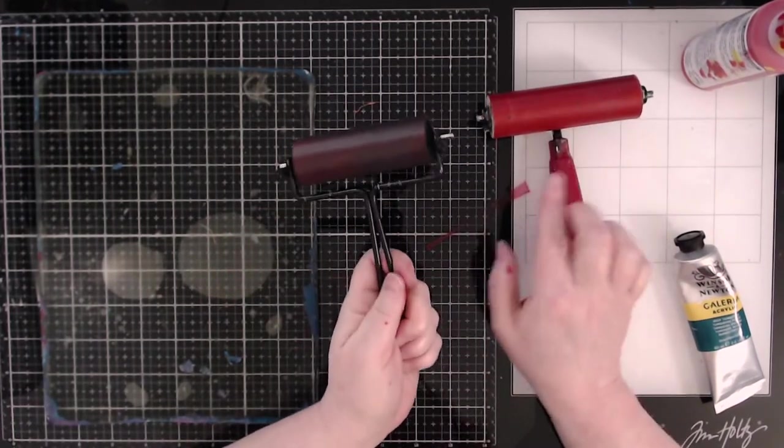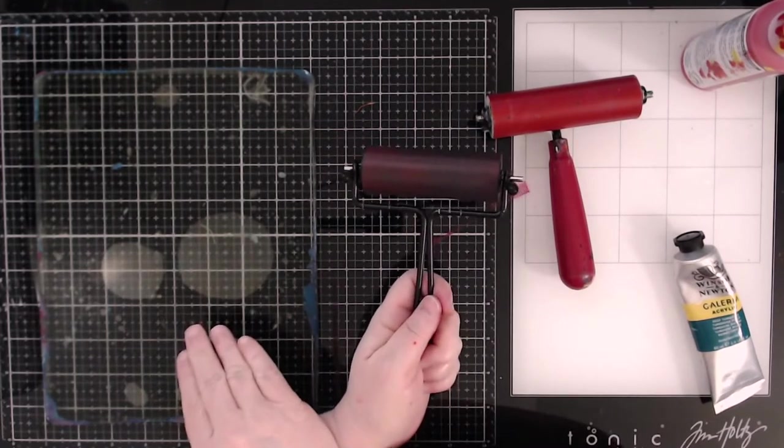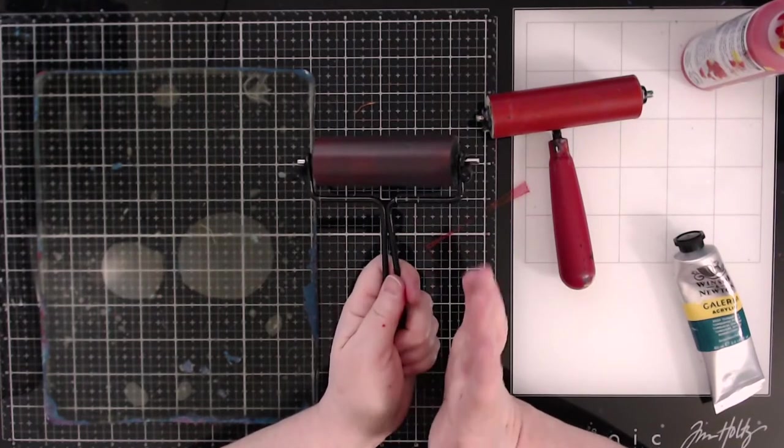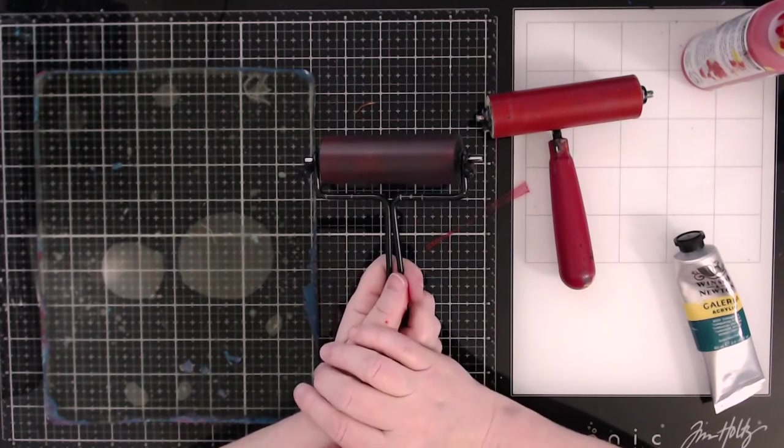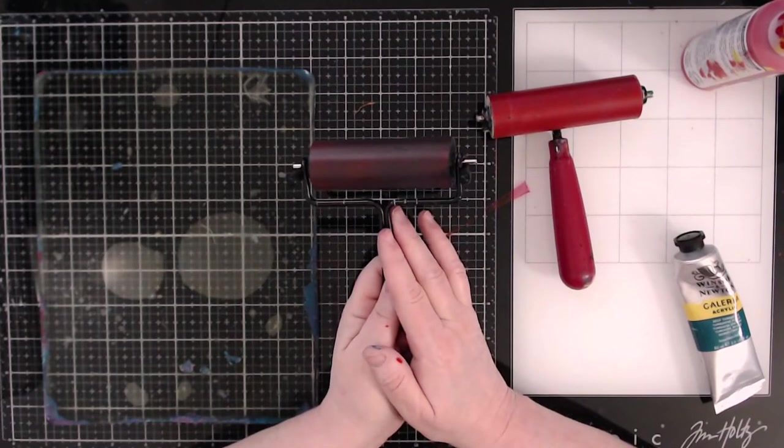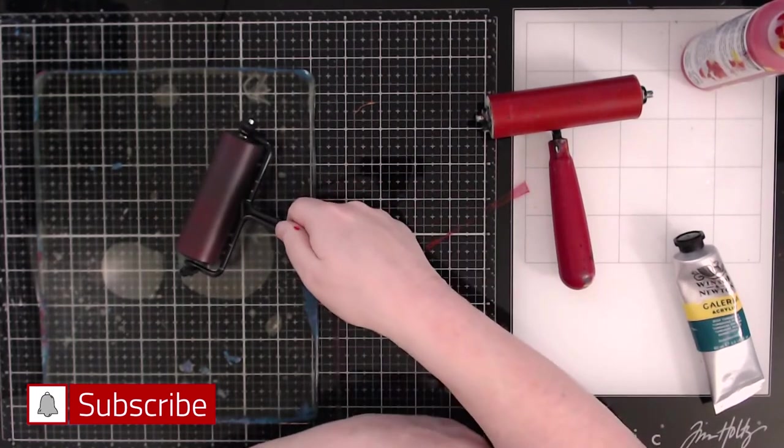What I think the Tim Holtz sprayer will be better for is the smaller gel plate. This is an 8x10. I think that will work fine. Anything larger than that. I haven't tried it out, but I'm not too sure if I would do that anyway.